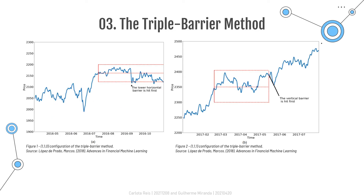The following figures show two of these configurations. On the left side, the configuration is [1,1,0] and the first barrier touched is the lower horizontal one. The right figure shows a configuration of [1,1,1], where the first barrier touched is the vertical one.